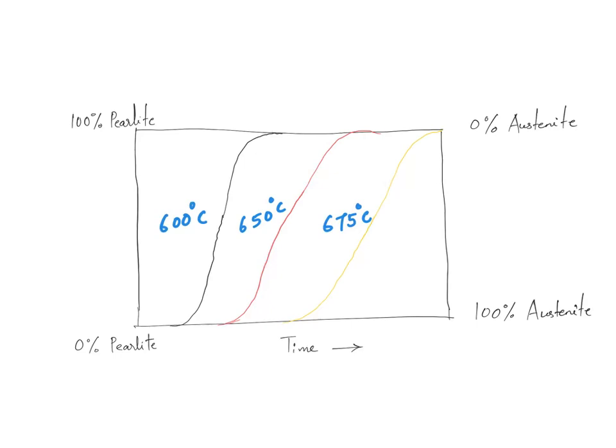Can we get a better figure consolidating all these things? The current curves capture only composition and time, with just two phases — pearlite and austenite. We will now discuss a better way of plotting all these data together.